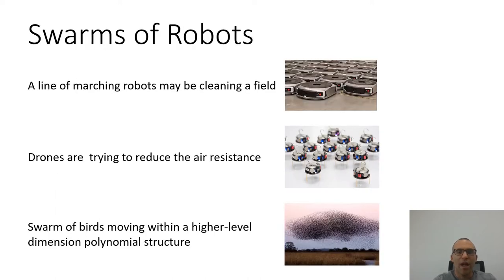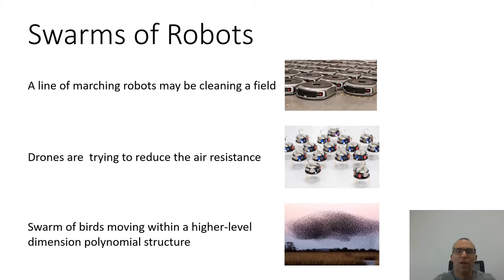Let's consider the case where a swarm of robots must perform a task with a specific structure defined in two or three dimensions of space. For example, a line of marching robots may be cleaning a field, or drones trying to reduce air resistance by creating a three-dimensional aerodynamic shape, or even robots mimicking a swarm of birds or fish moving within a higher level dimension in a polynomial structure.